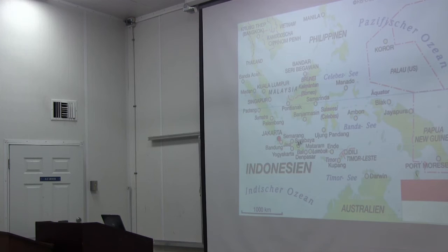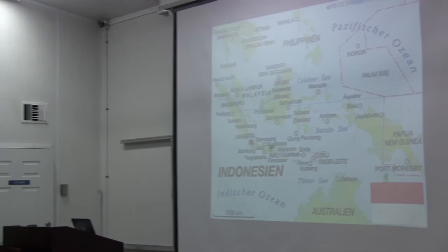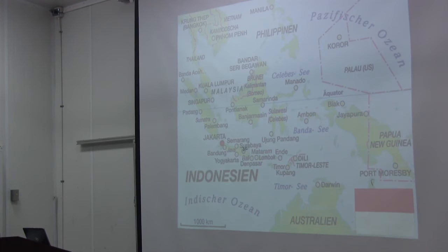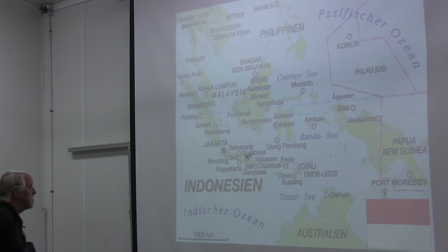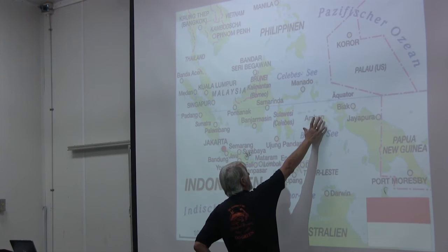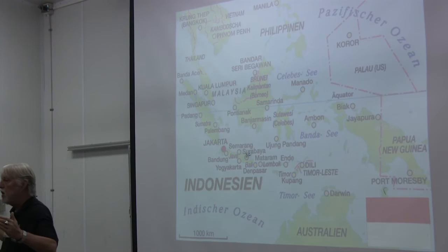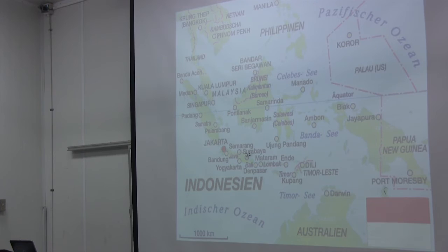What do you suppose the Moluccas have to do with Grenada? Nutmeg — that's where it comes from originally. The nutmeg grown in Grenada is supposedly of higher quality, or at least it was before the hurricane. These islands and Sulawesi are in between the continental shelves, and we'll possibly in the very next lecture come to the distinction between oceanic and continental islands, which is very important.